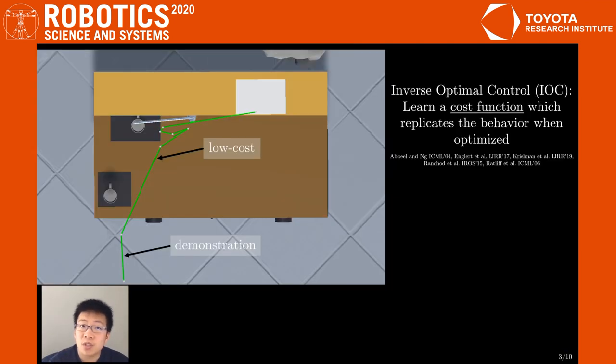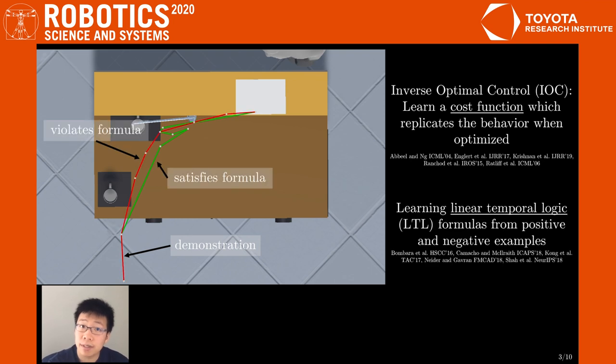IOC answers this question by assuming that demonstrators are optimizing a cost function and attempts to learn it. However, it's hard to learn a cost function that captures all of the temporal task constraints. Alternatively, these constraints can be directly encoded with LTL, but methods that learn LTL formulas from data generally require both safe and unsafe demonstrations to regularize the learning, rendering them inviable for safety critical robotics tasks.